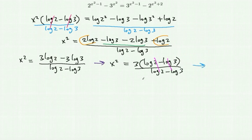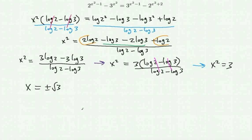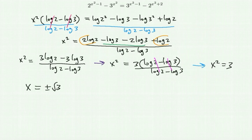So x² = 3, and taking the square root of both sides gives x = ±√3. This confirms the result from the algebraic method. It's sufficient to check only the positive value since x is squared in every exponent.